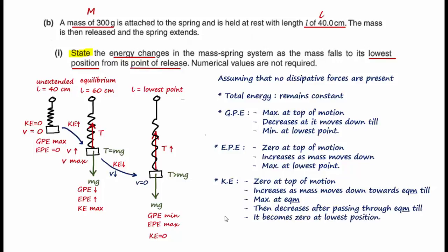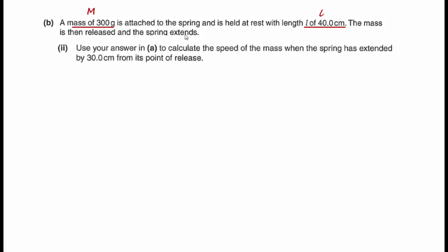Note that this is a qualitative question, so you should give your answer in continuous prose. What is presented here are the key points that need to be included. You may also present your answer in terms of energy changes as the mass moves from one stage of motion to another, but the points about how each type of energy changes must still be included. Next, we look at Part B(ii).